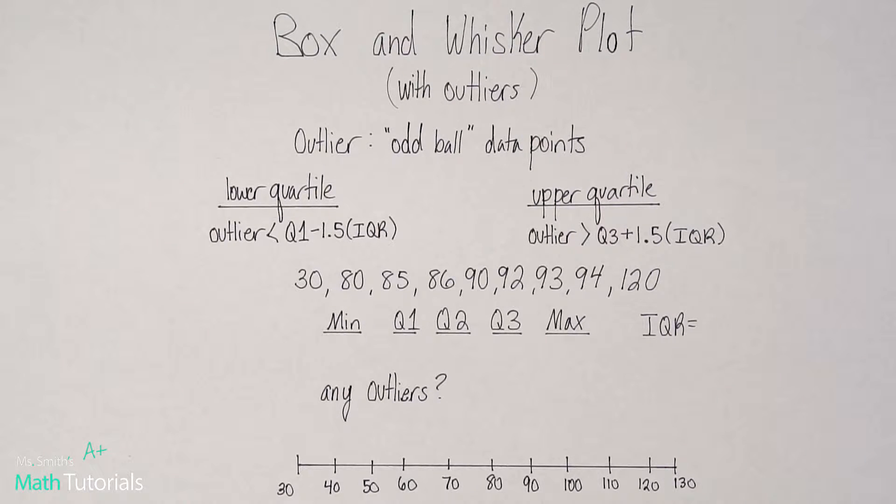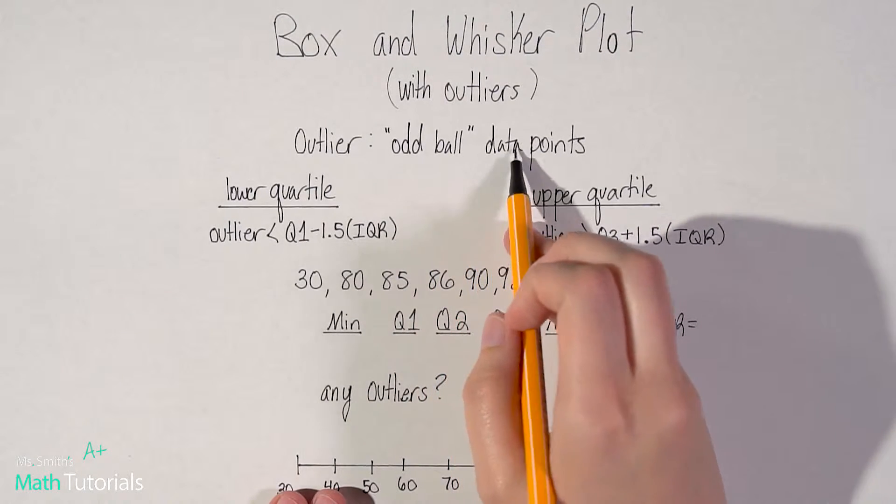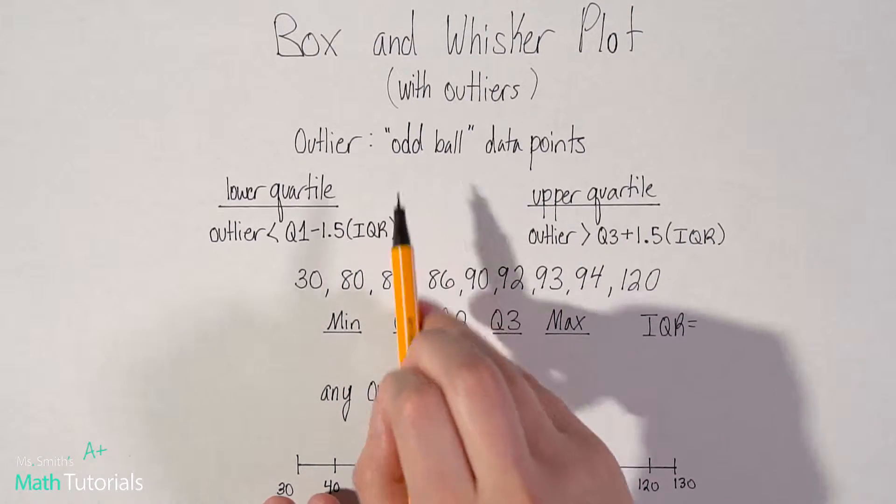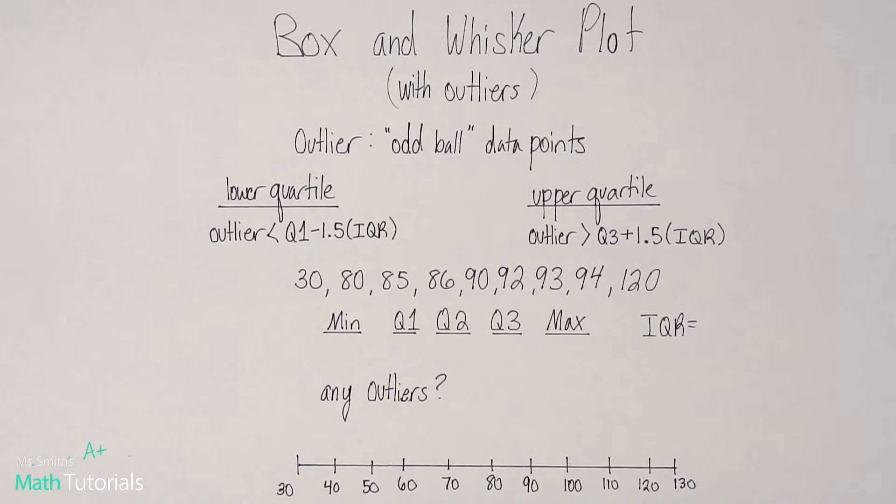So what is an outlier? An outlier is, I like to think of it as an oddball data point. So in your list of data, it's the data points that just kind of stand out, and you're like, I don't think that fits with the rest of the data. They usually will be pretty obvious, but sometimes you can have a suspicious outlier, and we've got to be able to prove that it is in fact an outlier. We can't just say, oh, you look like an outlier, you're thrown out, right? We've got to prove that it is in fact an outlier.